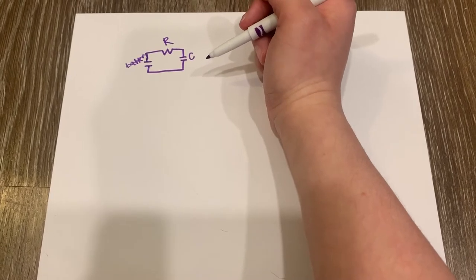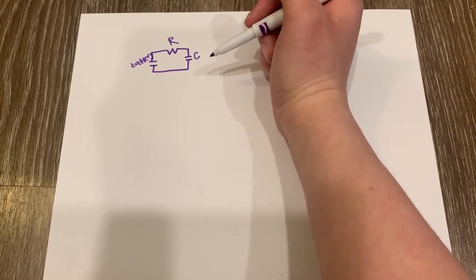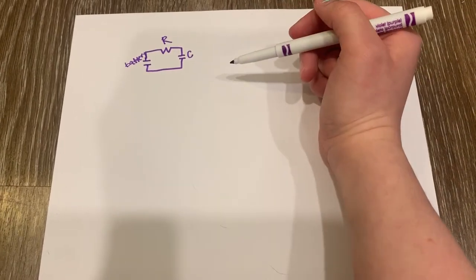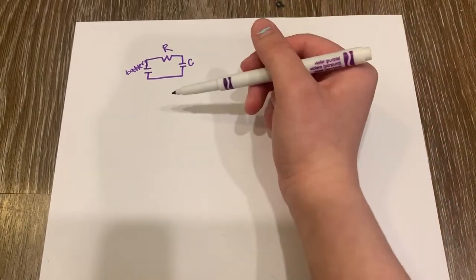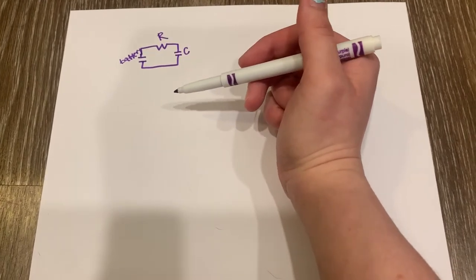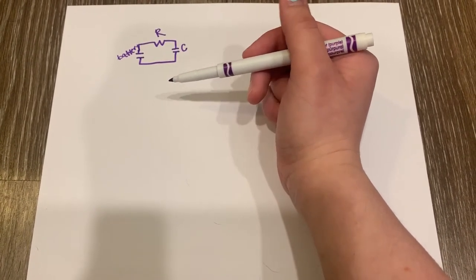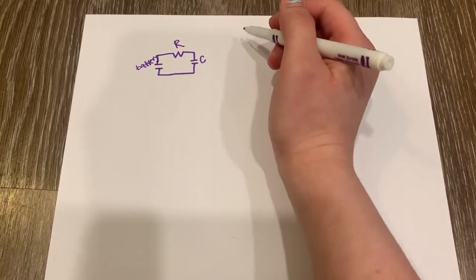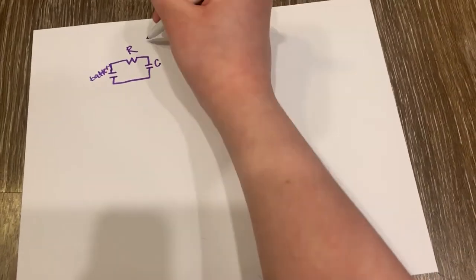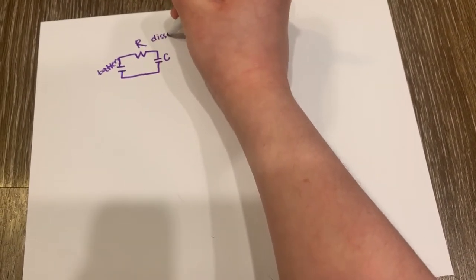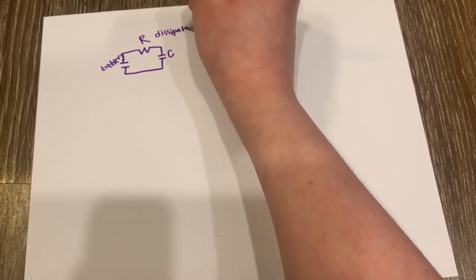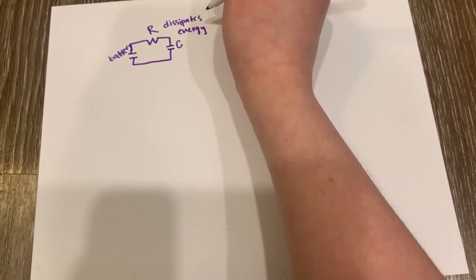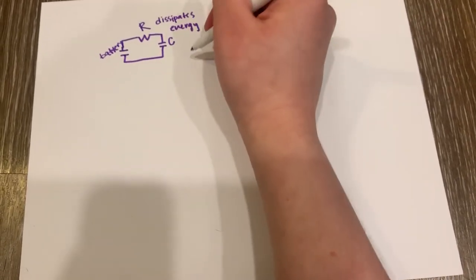So what do each of these elements do? A battery is the source of energy for the whole circuit. And let me go back to the battery for a second. So it's the source of energy for the circuit and it causes current to flow all around the circuit. The resistor resists the current and dissipates energy while the capacitor stores electrical energy.